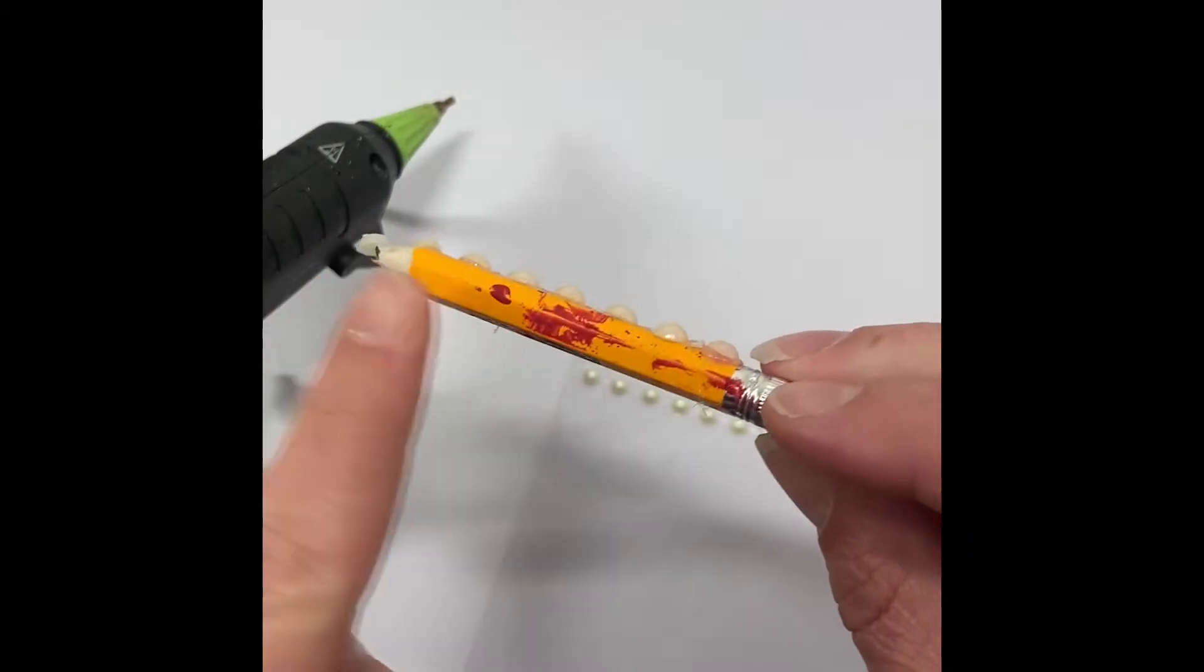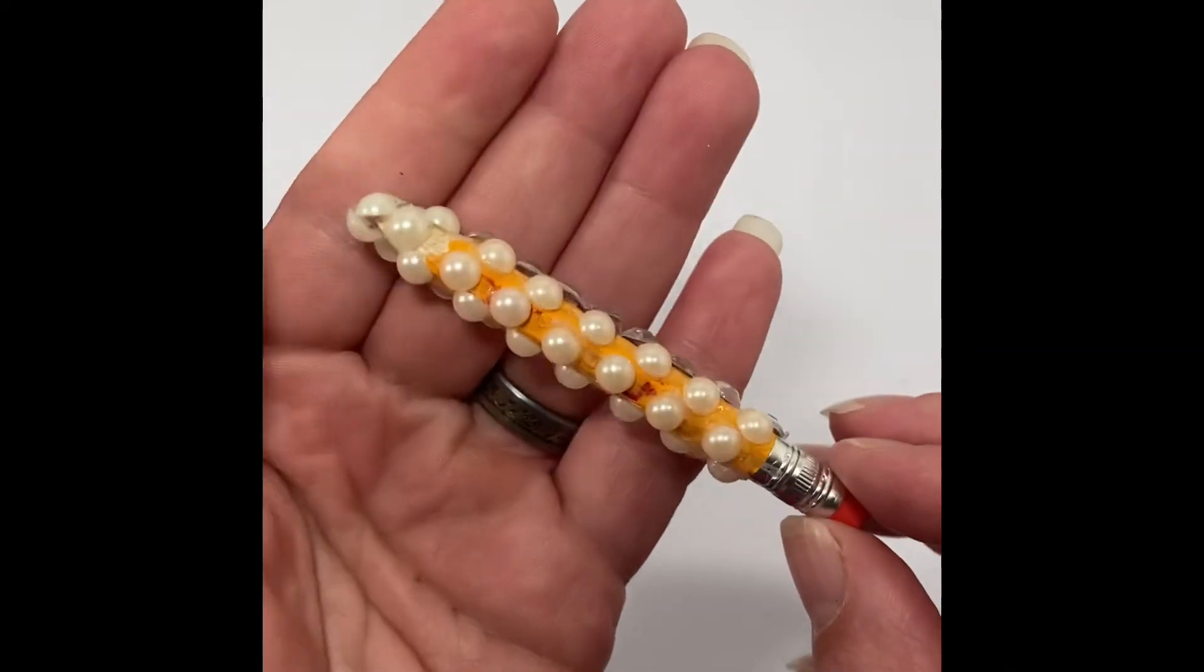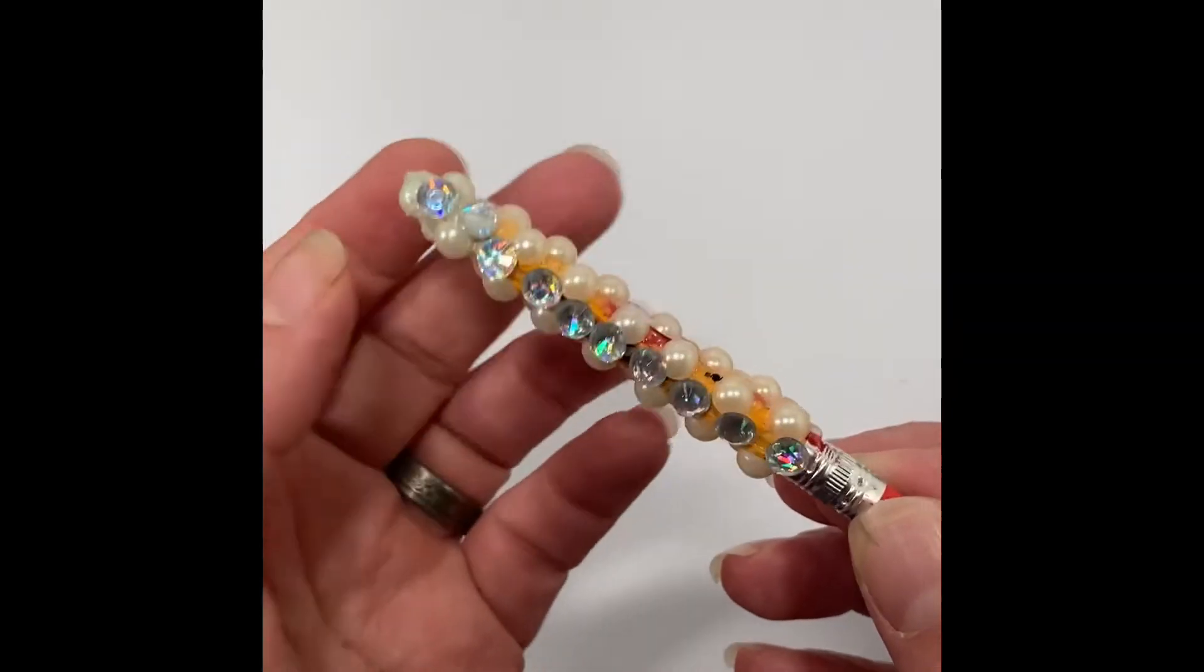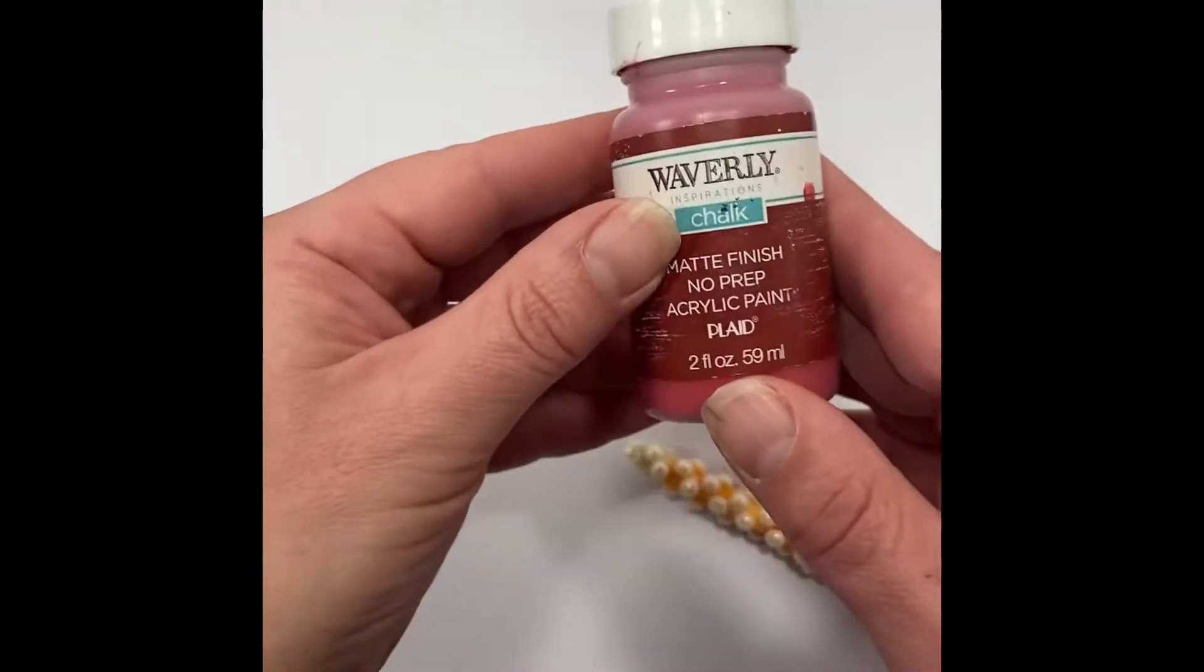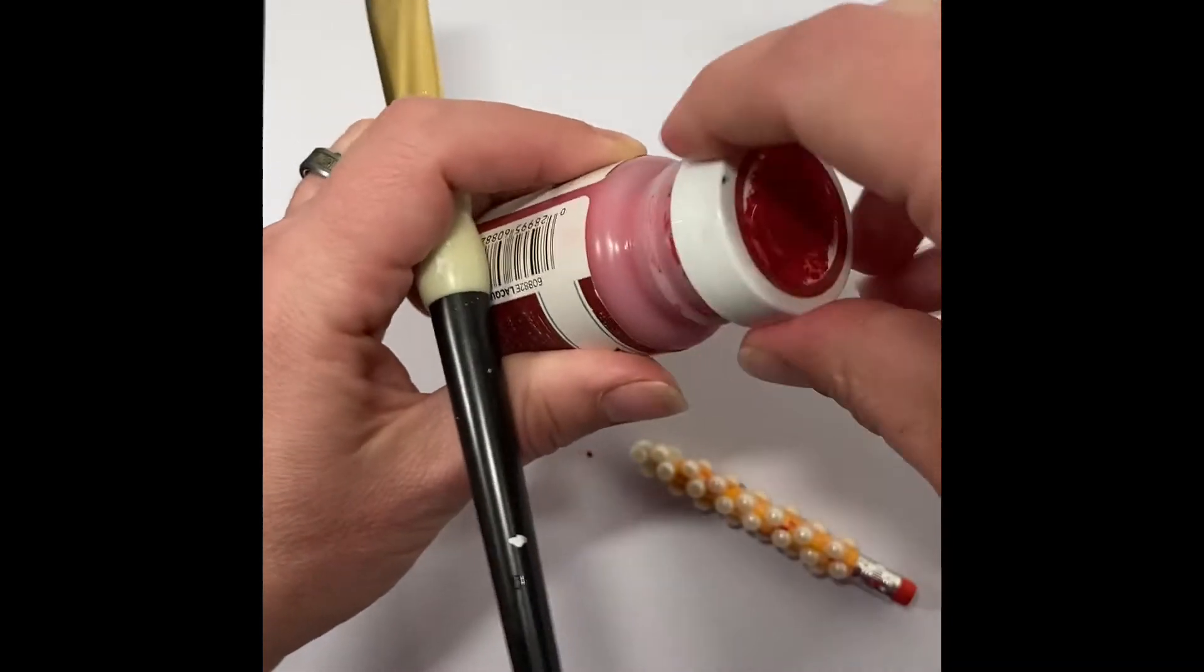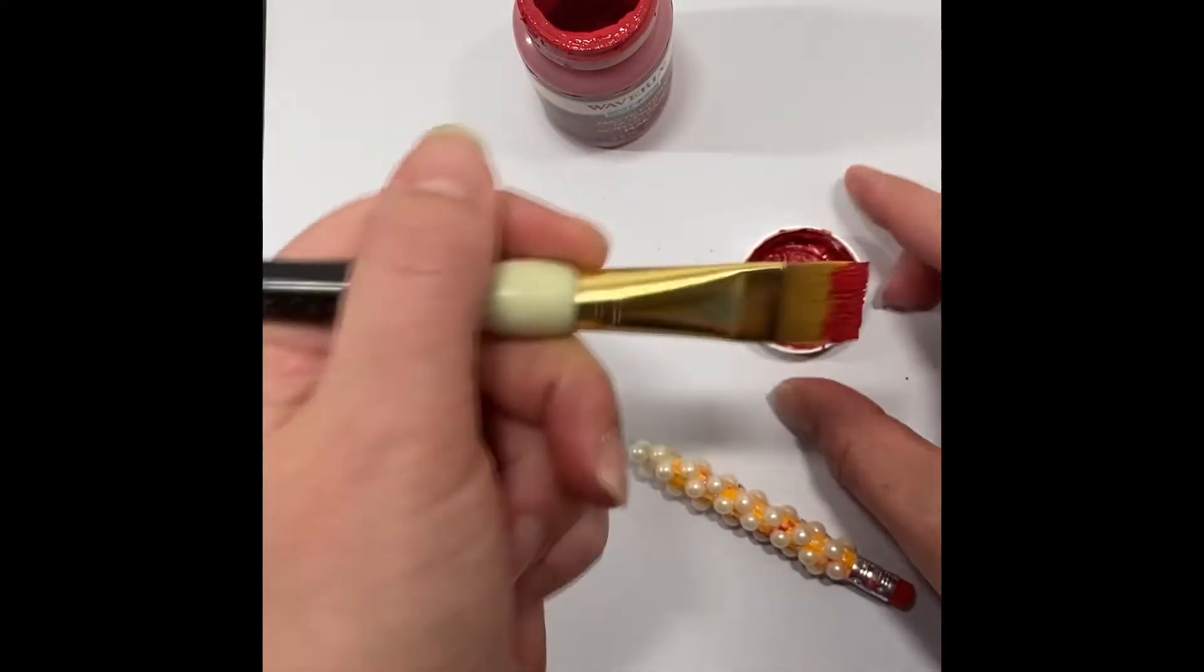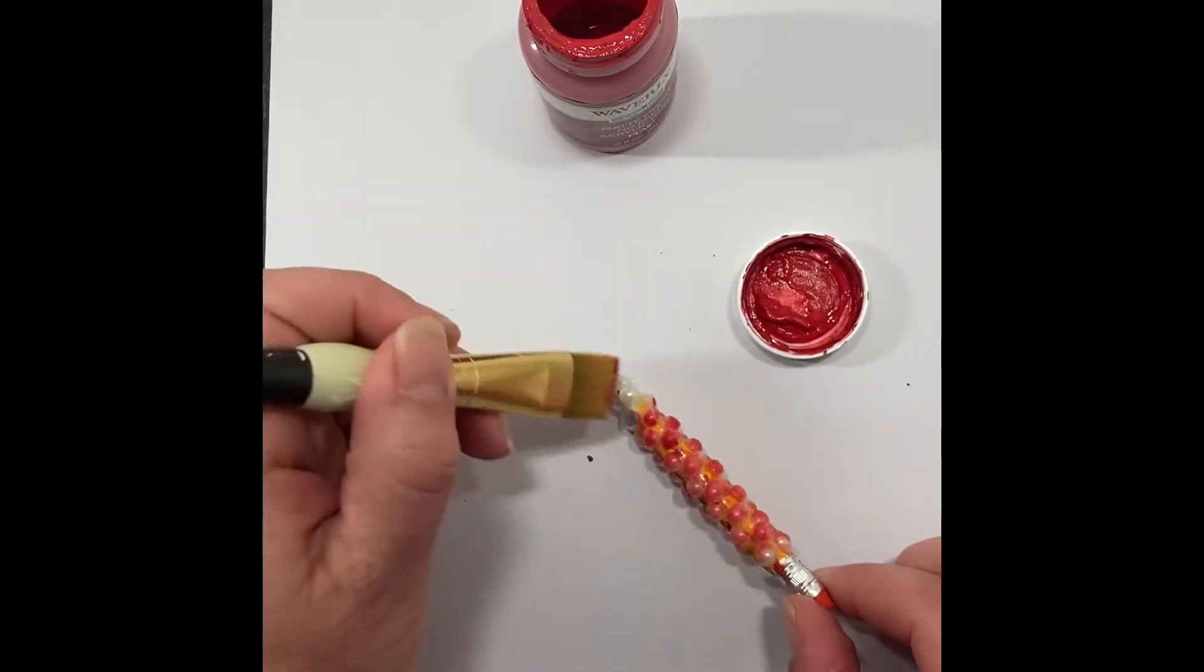Once you get your first row of pearl stickers, you're going to turn the pencil over to the next plane and put pearl stickers in between each of those. Go around the entire barrel of the pencil. Now, you notice when I just showed you here, I had some gemstone stickers. Those also work when you run out or don't have any pearl stickers.